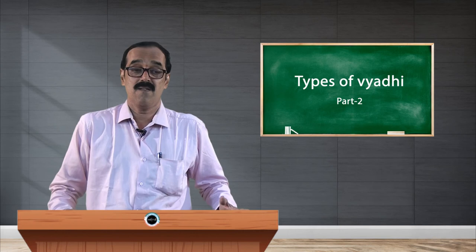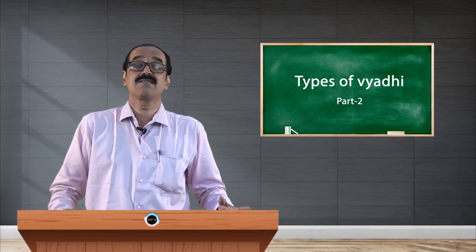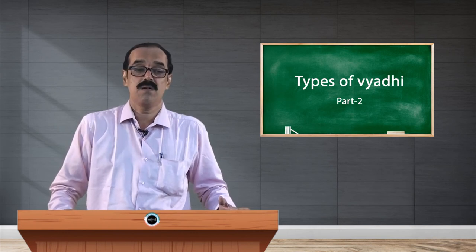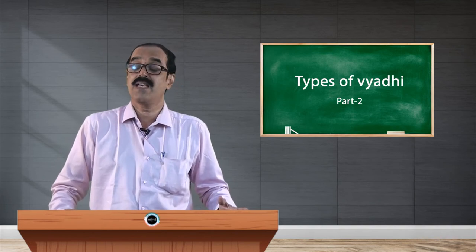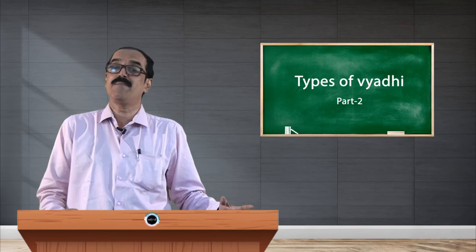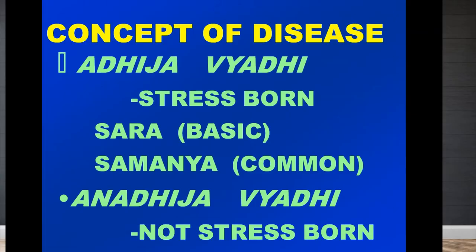When Varuna asks Bhrigu 'Who are you?' and tells him to go and meditate, he realized he is not only a physical body. All concepts of the body are explained through the Panchakosha concept — the five layers of personality — which we have discussed several times.